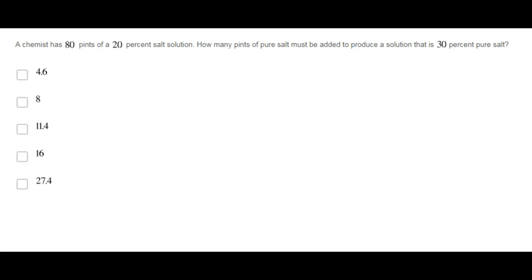A chemist has 80 pints of a 20% salt solution. How many pints of pure salt must be added to produce a solution that is 30% pure salt?